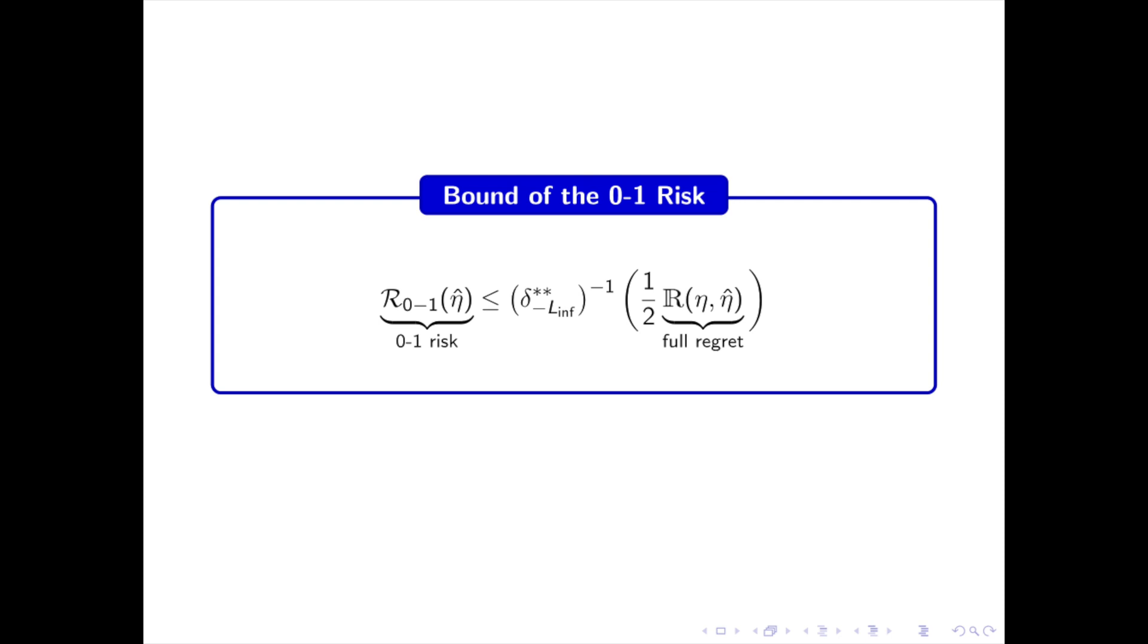Therefore, if the full regret of eta hat is small, then its 0-1 regret is small too. Finally, the paper also shows that this bound on the 0-1 regret tends to 0 polynomially fast.